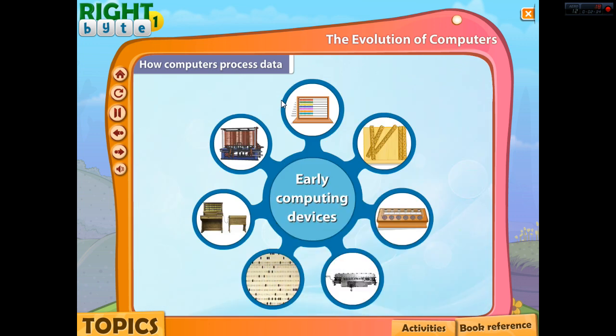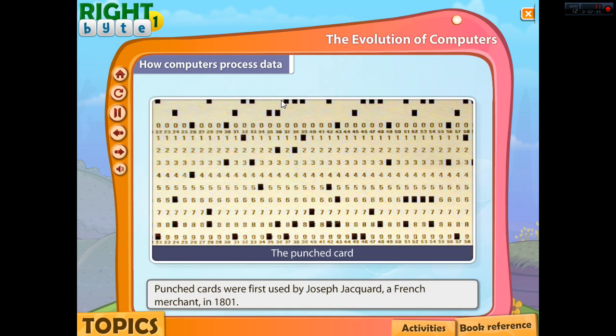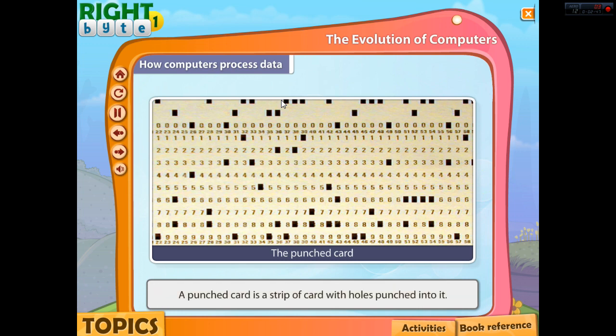The Punched Card. In 1801, punched cards were first used by Joseph Jacquard, a French merchant, in the weaving business to control a weaving loom. A punched card is a strip of card with holes punched into it.